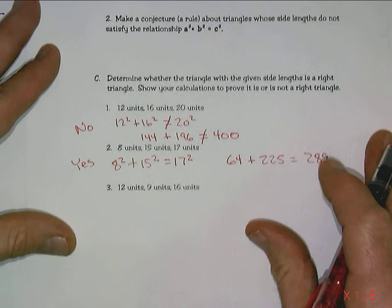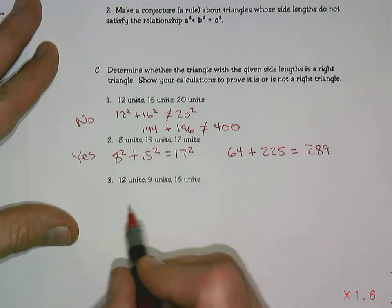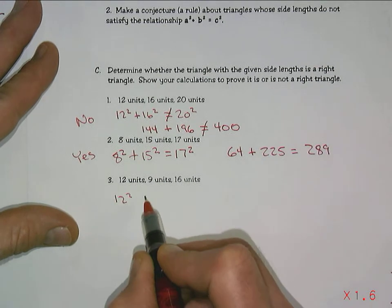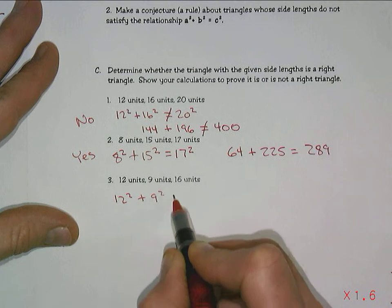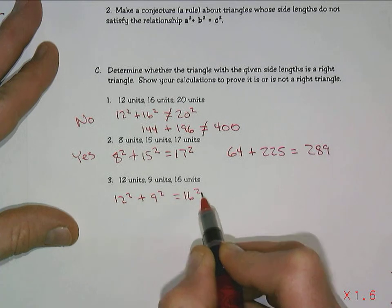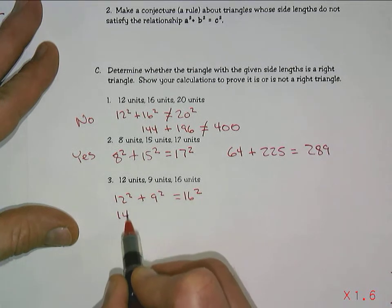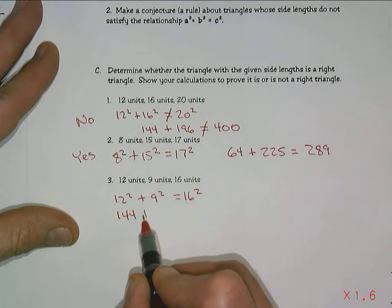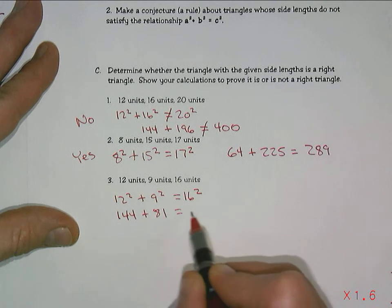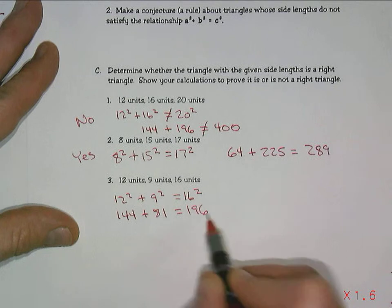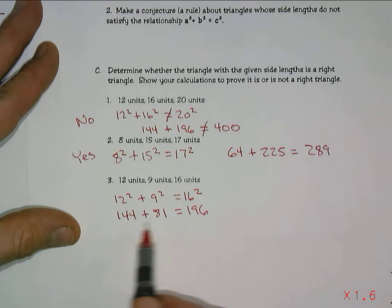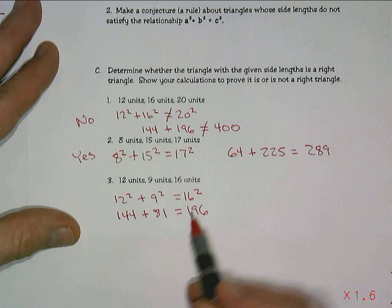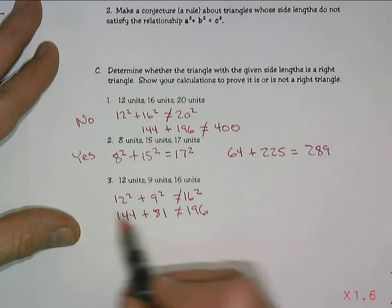One more: 12 squared plus 9 squared, does that equal 16 squared? 144 plus 81, does that equal 196? You can see that this is definitely more than 200, so the answer here would be no.